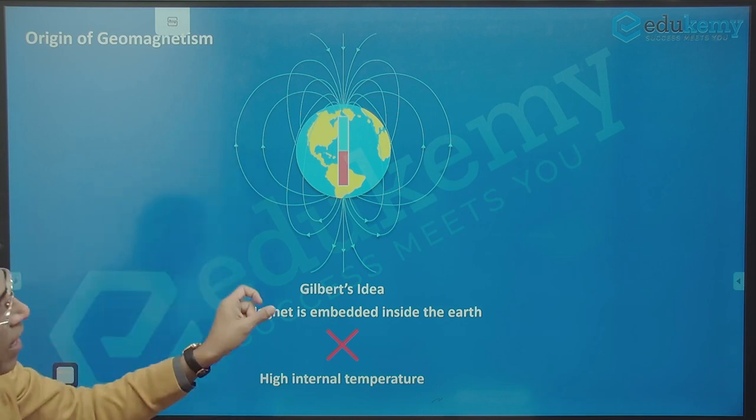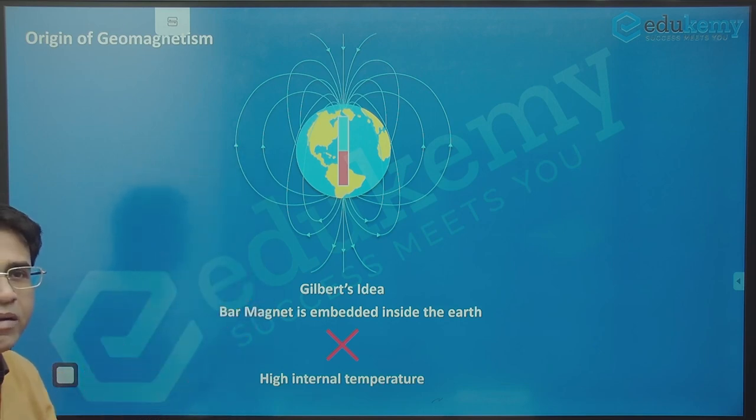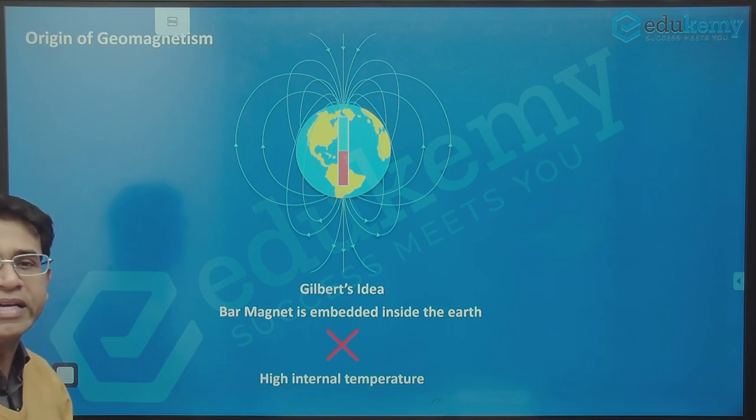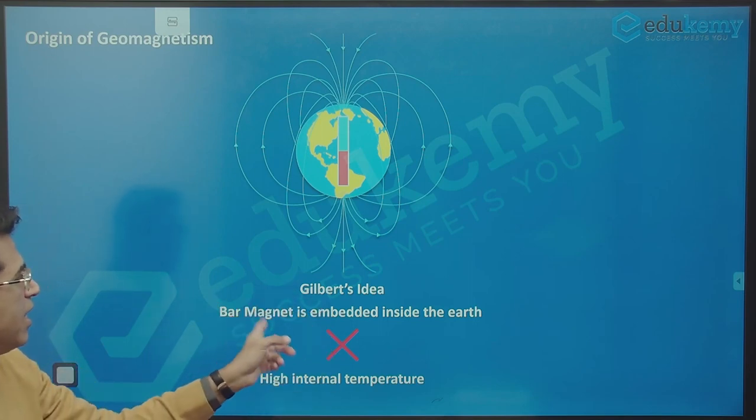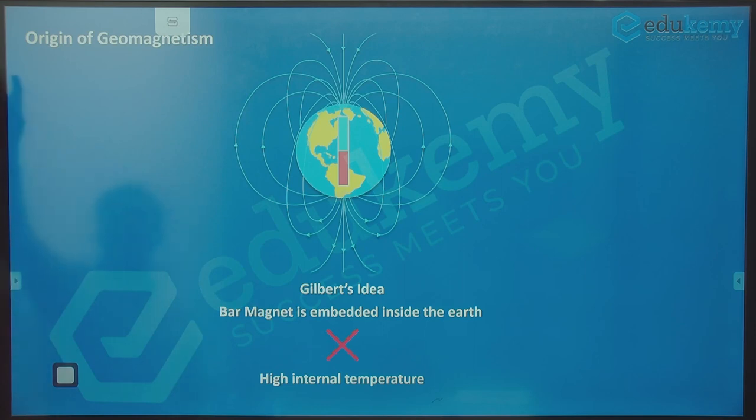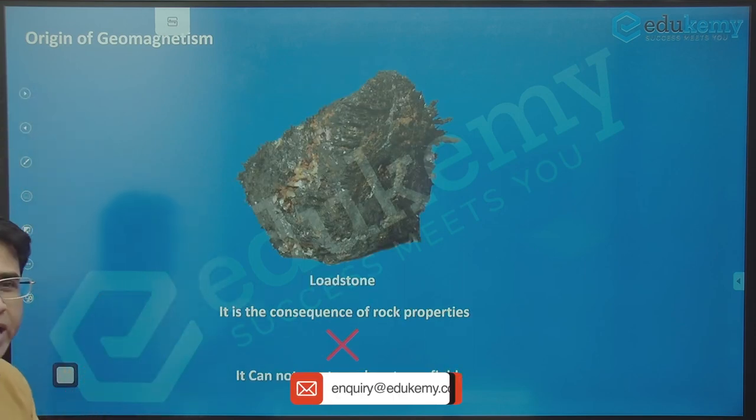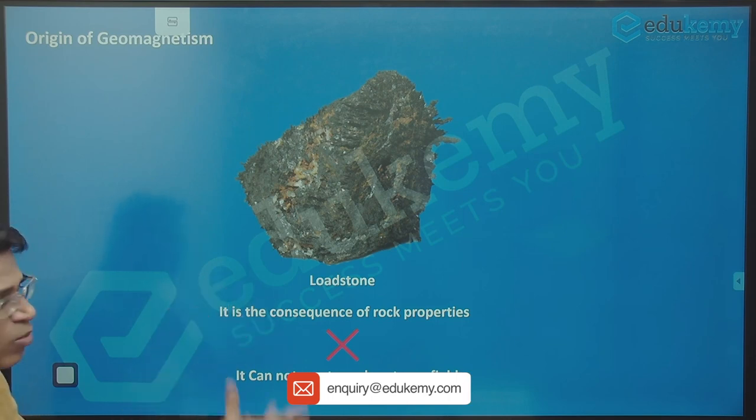Gilbert's idea is that inside the earth there is a bar magnet - that's the wrong concept. It is not a bar magnet because if there was a bar magnet, it would have already melted away. Gilbert's idea of an embedded bar magnet is incorrect.